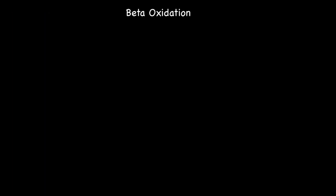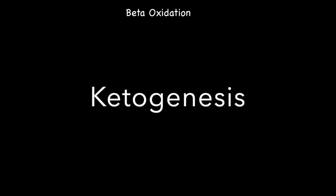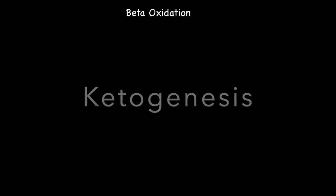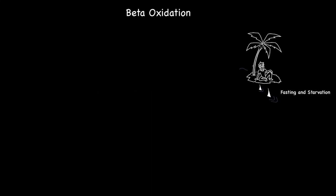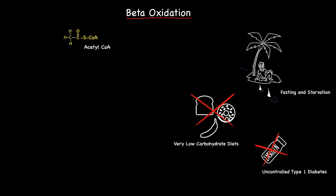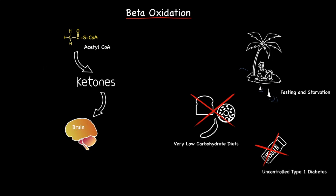One more interesting thing of value is the link between beta-oxidation and ketogenesis. During times of very low carbohydrate availability to body cells — for example during fasting and starvation, very low carbohydrate diets, and uncontrolled type 1 diabetes — the acetyl-CoA produced through the beta-oxidation of fatty acids can also be used to produce ketones, which in turn act as an energy source for extra-hepatic tissues, such as the brain, through the process of ketogenesis.